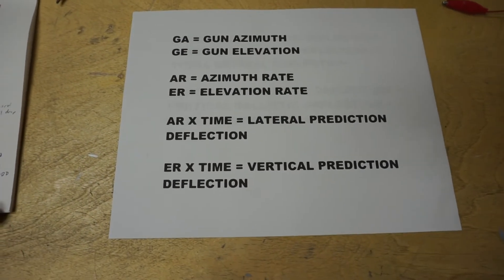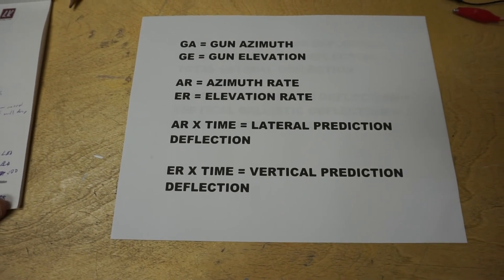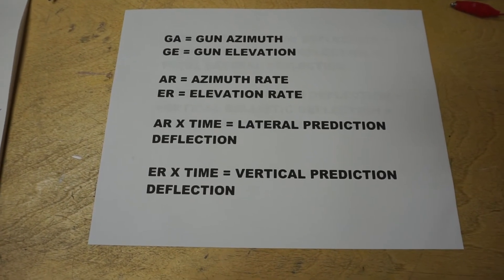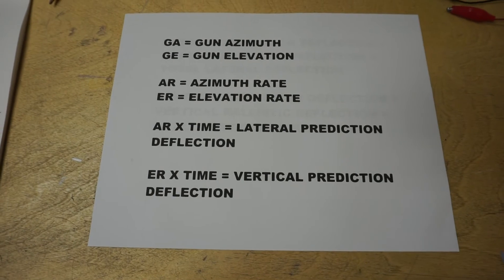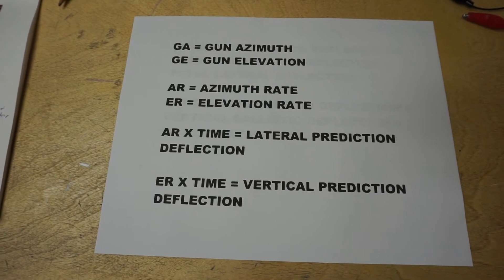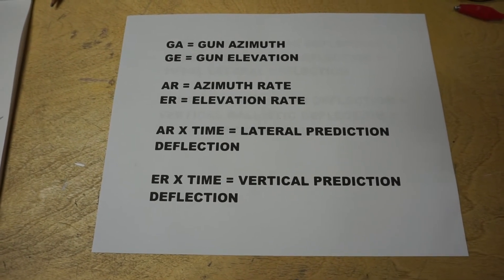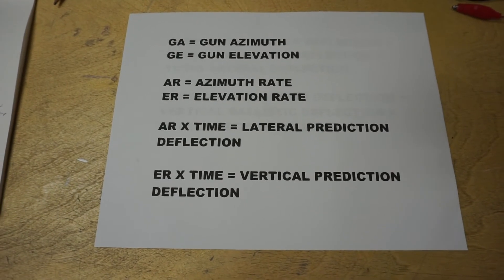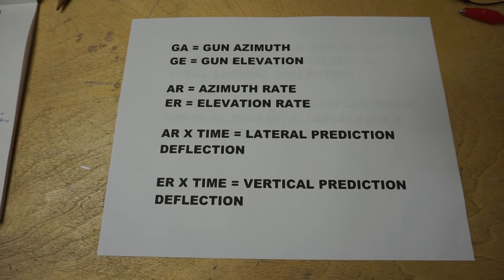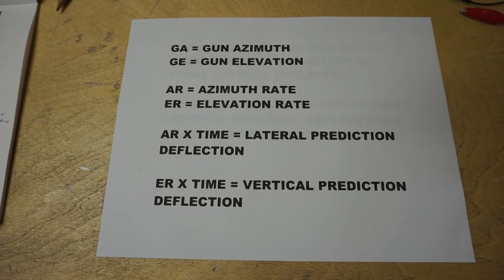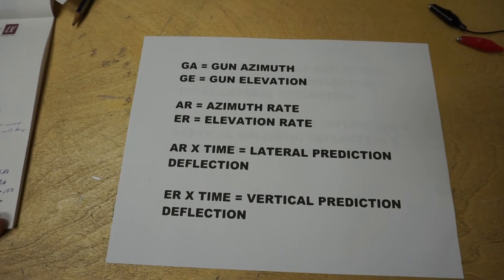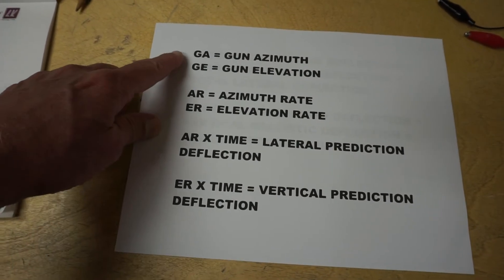In other words, there is the present position of the target and its future position. Just as the Norden bombsight used time of fall and ground speed to determine the bomb release point, the gun sight uses azimuth rate and elevation rate along with time to determine where the fighter is going to be from its present position, giving a future position or a deflection. The gun sight also has an internal motor which helps interpret the rate of elevation or azimuth change as input by the rotary drive cables.